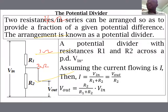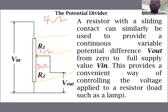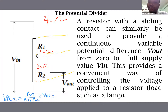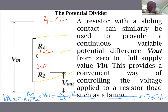The potential difference across R2, which we call V_R2, is given by: V_R2 = (R2 / (R1 + R2)) × V-in = (3 / (1 + 3)) × V-in = 0.75 × V-in. So when V-in is 10 volts, you should expect 7.5 volts across R2. When V-in is 100 volts, you should expect 75 volts across R2.